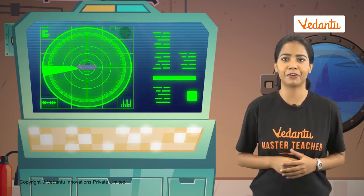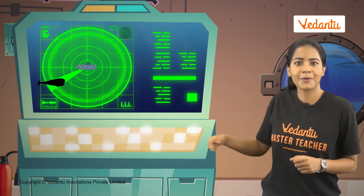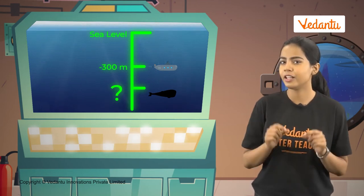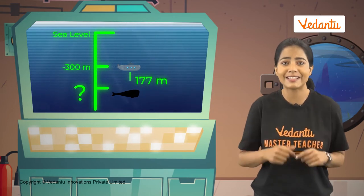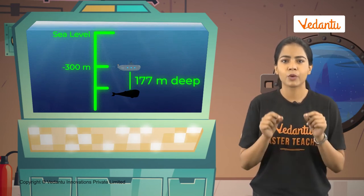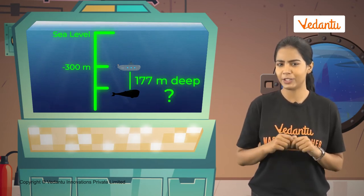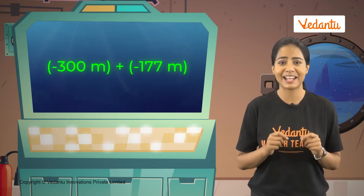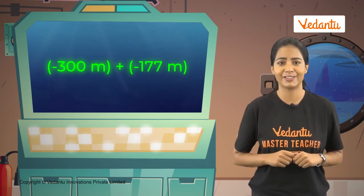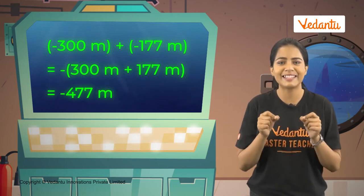Today we will try to go even further. What is the total depth we need to reach? Let's add the depths and find out. Negative 300 plus negative 100 plus negative 77 gives us negative 477 meters.